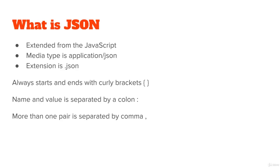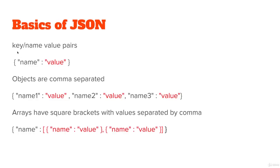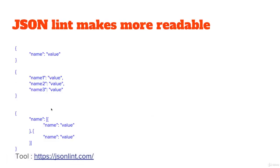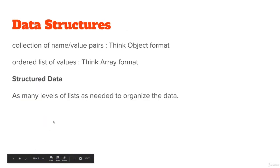JSON is a media type, so the file extension is .json. It always starts and ends with curly brackets. Names are separated with a colon, and each name can have a paired value, with values separated by commas. So it's key-value pairs — we've got our key name and then our value, with double quotes around them. We can also use arrays inside JSON to hold multiple values within an object. It looks very similar to JavaScript objects, but there are some differences we'll cover in the upcoming lessons.